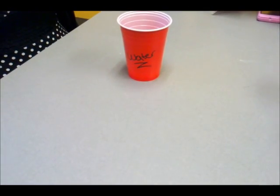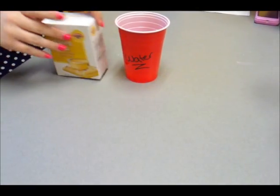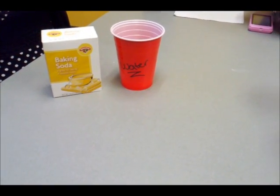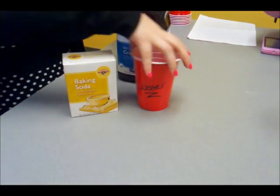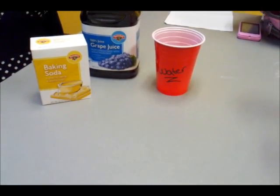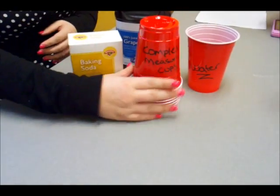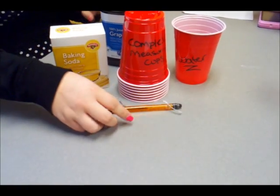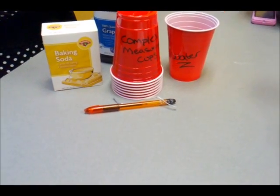We're going to start with water. We've got the water there. We need baking soda, which is real cheap. Grape juice, preferably from concentrate. A series of complex measuring devices, also very cheap. Stirring instruments, recycled of course. And paper, also recycled.